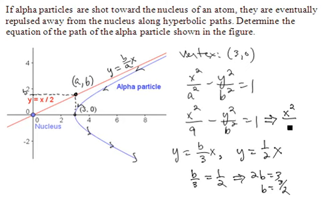should be x squared over nine minus y squared over three halves squared, that's nine-fourths, equals 1. And that gives us the path that we were asked to find.